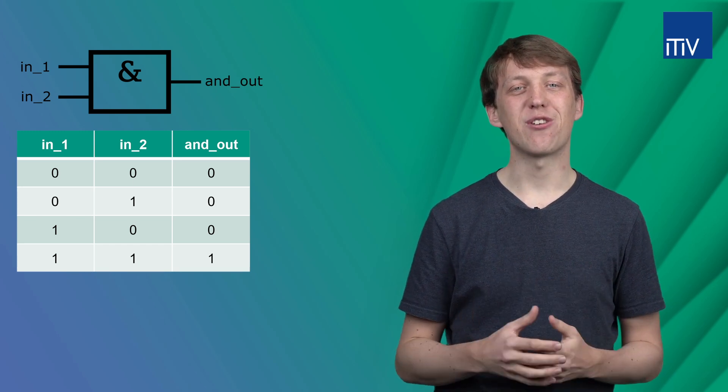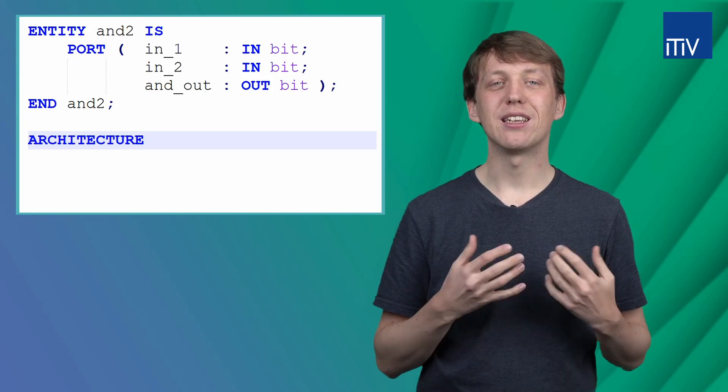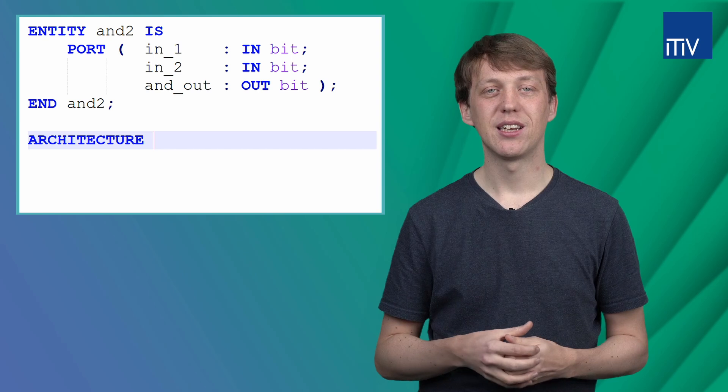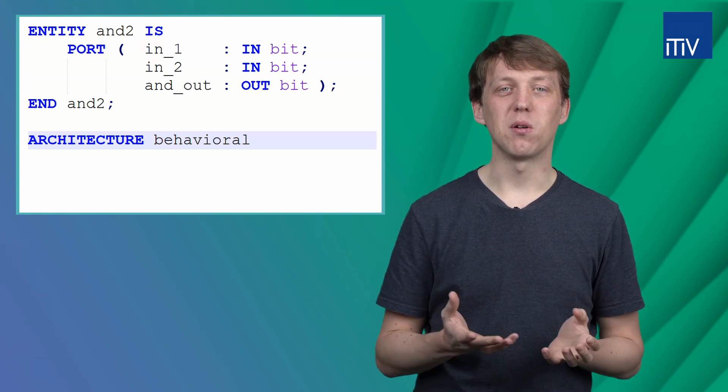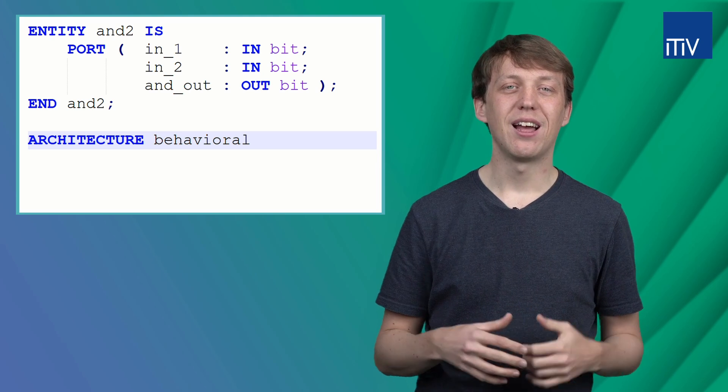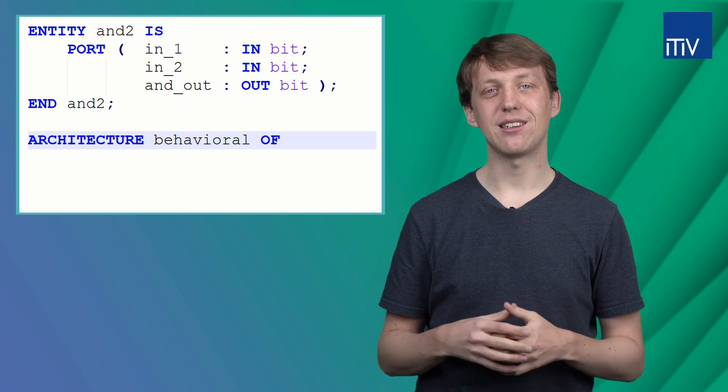Let's come back to our example. We first have to use the keyword architecture and then give it a name. Since we will describe the behavior of it, I just call it behavioral. After this, we need the keyword OF and link the architecture to the entity, so in this case and_2.